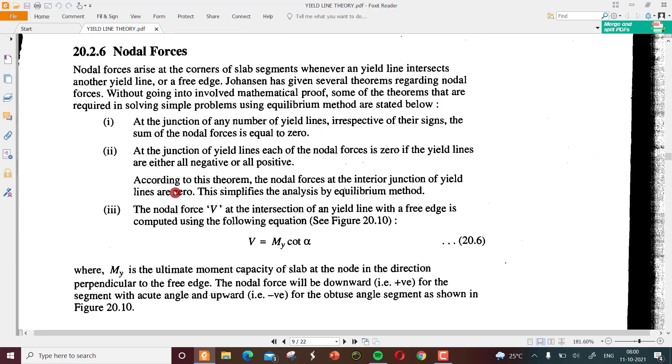Some of the theorems which are required for solving simple problems using equilibrium method: Our analysis will be based on these simple theorems. The first one is that at the junction of any number of yield lines, irrespective of their signs - that is, it can be a negative moment or a positive moment. Positive yield lines are always by the sagging moments and the negative are by the hogging moments.